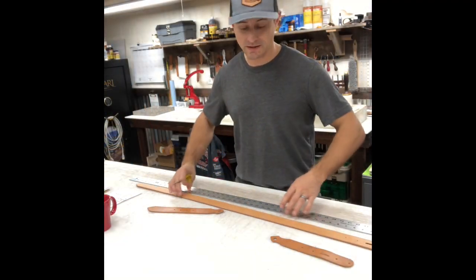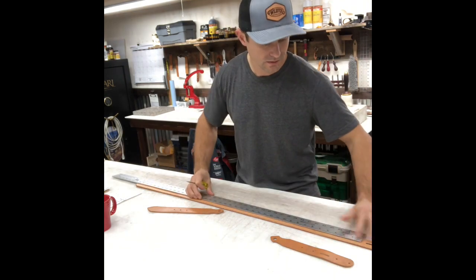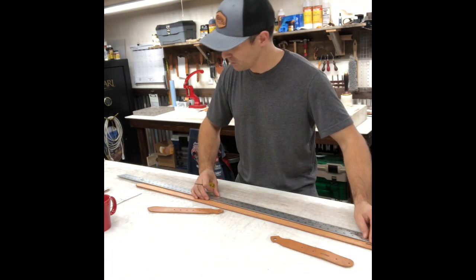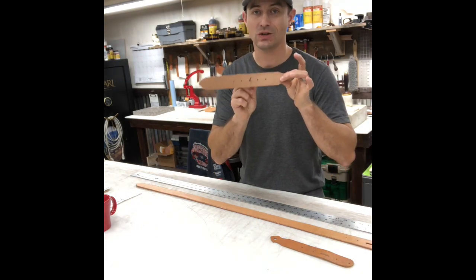Now that we've checked our measurement, take our ruler, go from the center of that oblong hole to that measurement is your center hole.